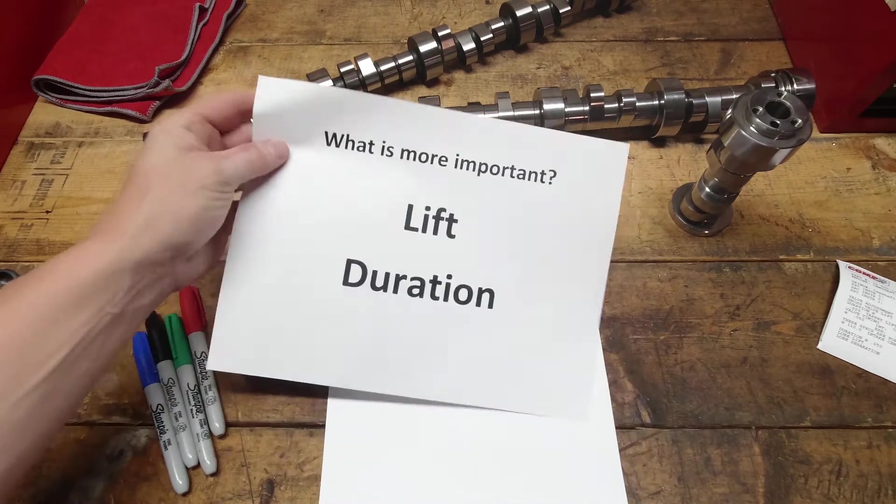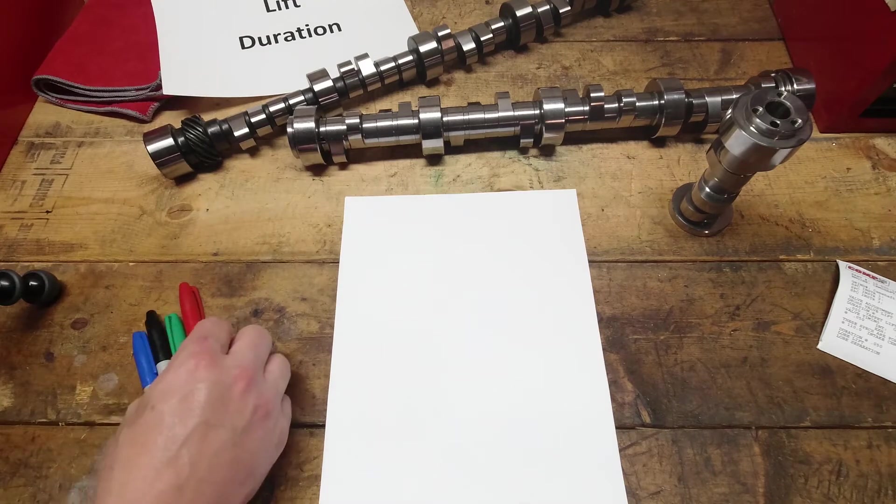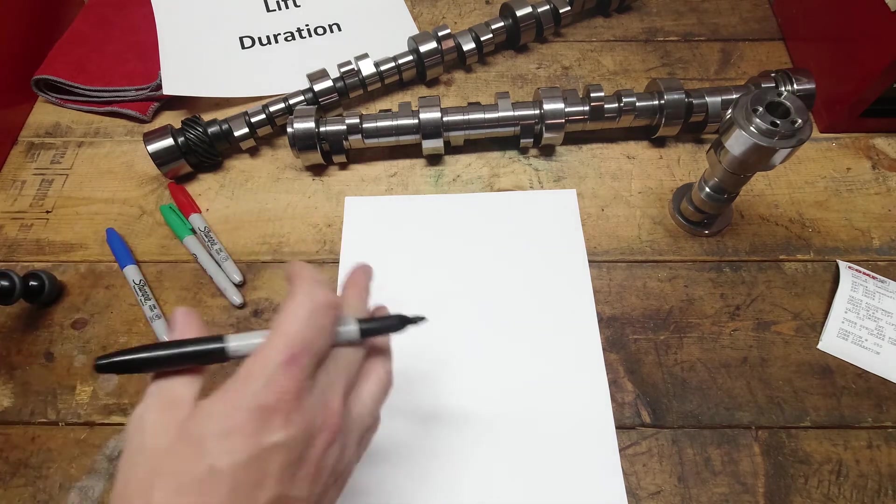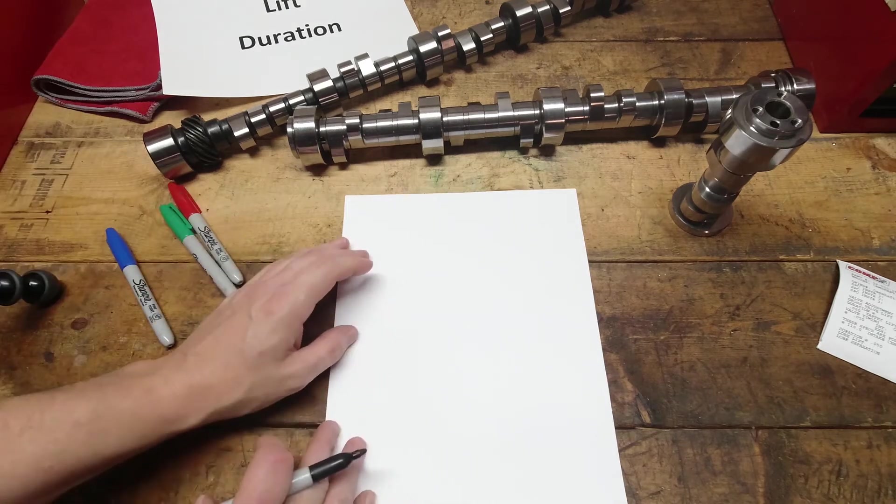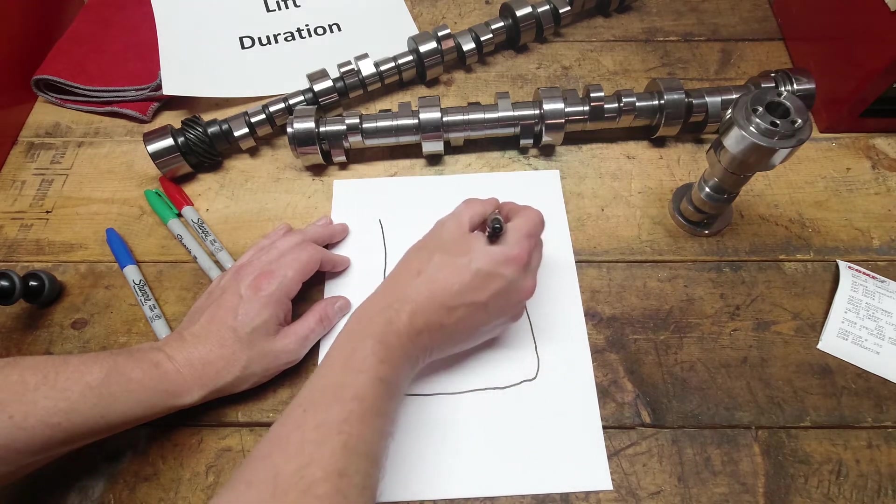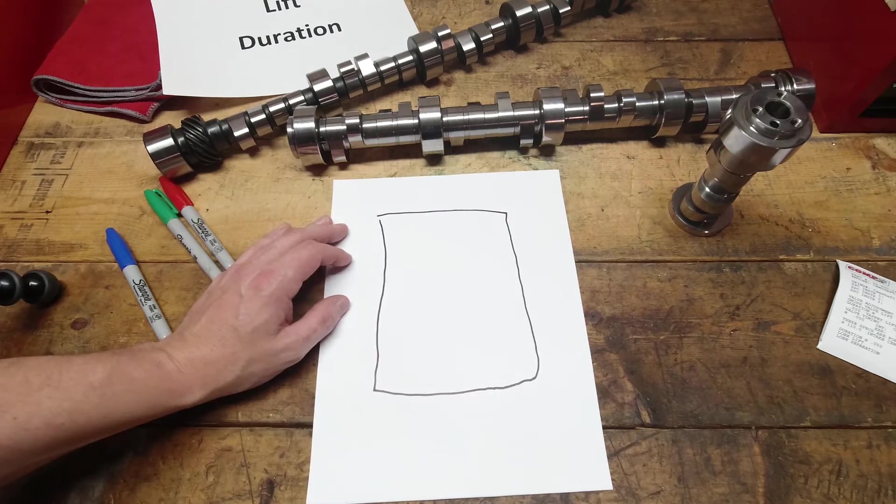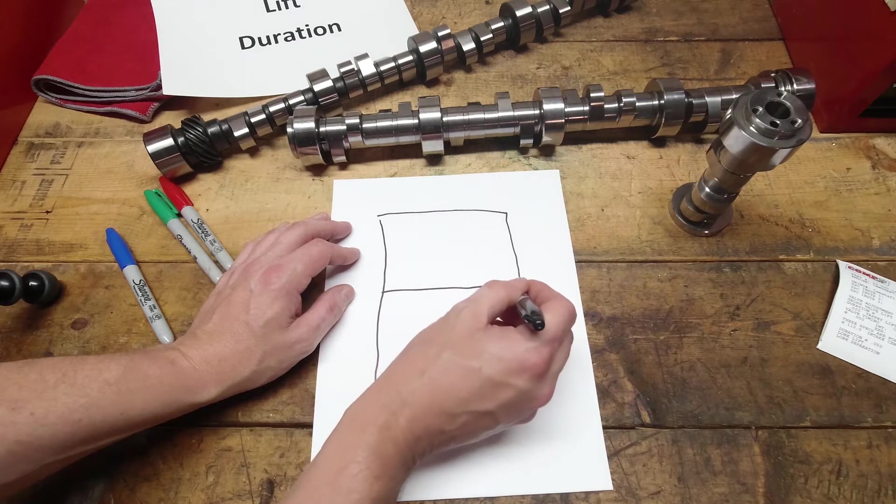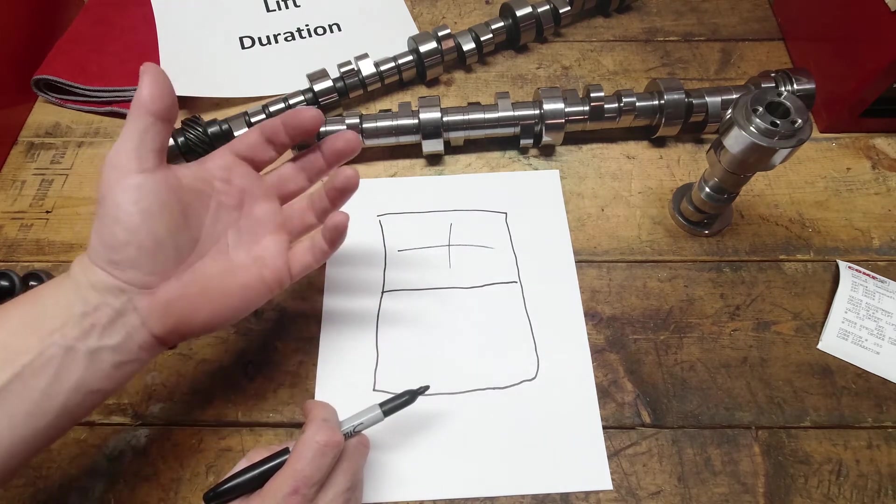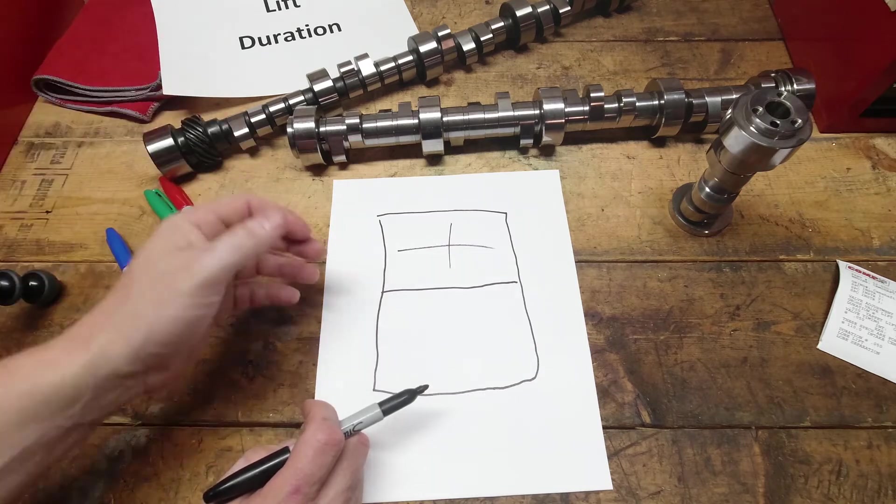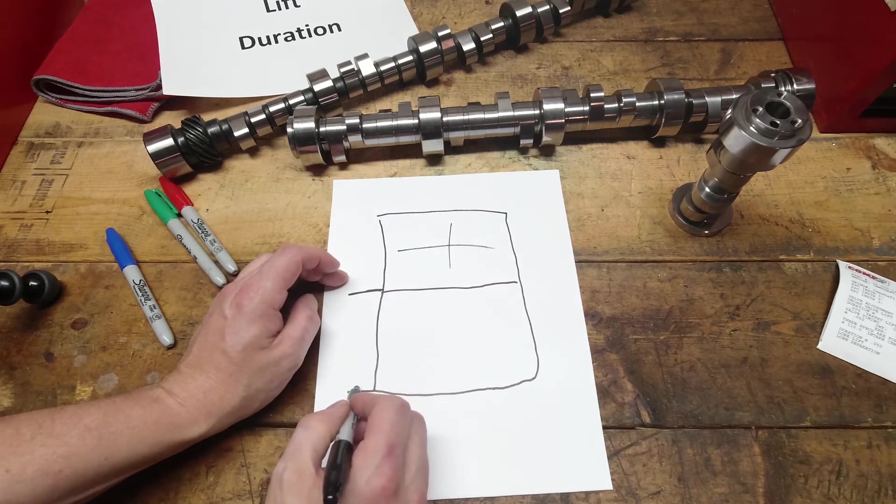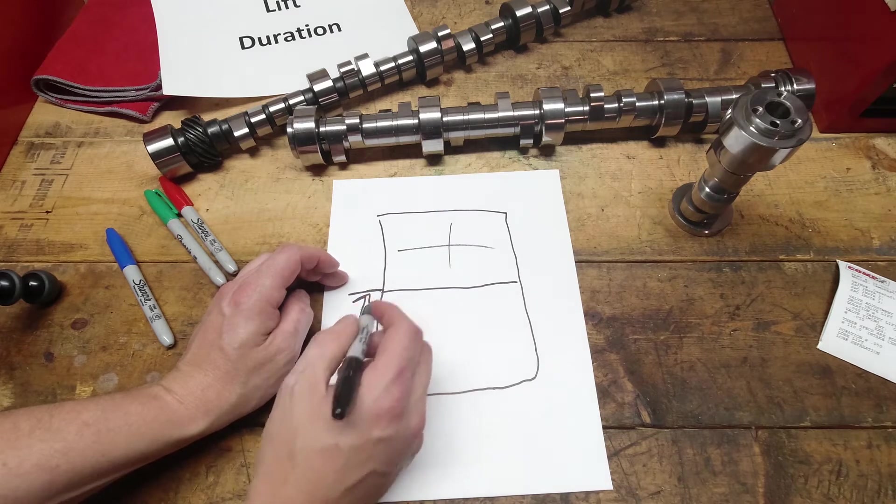Lift and duration. Now, lift and duration obviously are two critical components to selecting how the camshaft is going to run and operate within the engine. So I want you to think of it very simply. I try to draw this out the best I can. This is a window. A window you see in your house, whatever. Most windows open about halfway up. There's panes of glass, whatever. This part down here is what slides up and it opens up the window to get air inside the home, trailer, whatever you're working on.